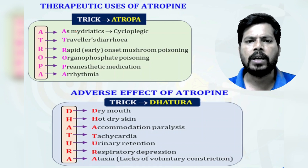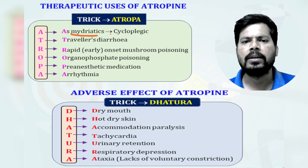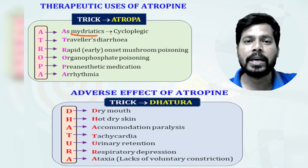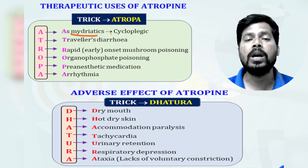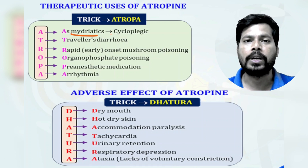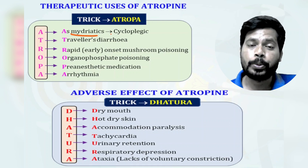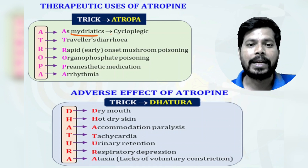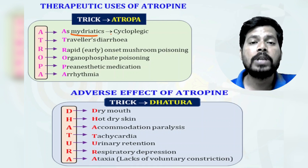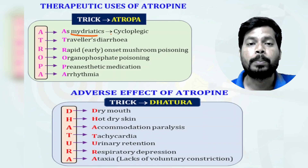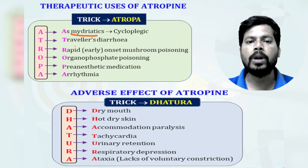First, atropine is used as a mydriatic. Atropine shows action opposite to acetylcholine — acetylcholine is a parasympathomimetic, while atropine is a parasympatholytic. So atropine used as a mydriatic also causes relaxation of the ciliary muscle, that is cycloplegia — paralysis of the ciliary muscle.